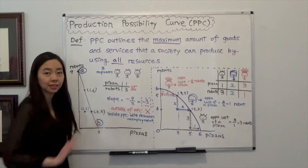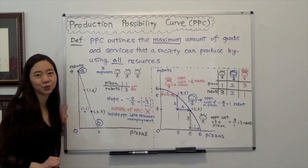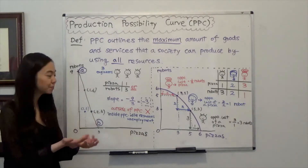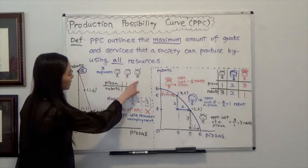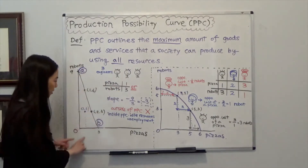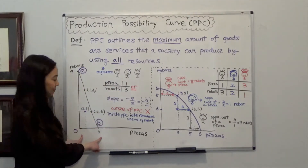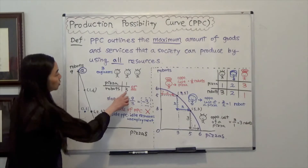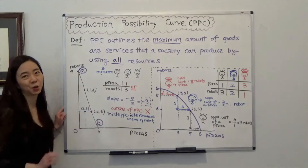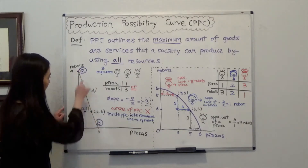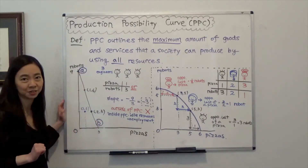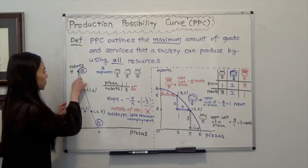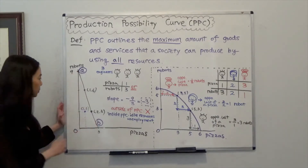Let's put pizza on the horizontal axis and robots on the vertical axis. Suppose we have all engineers producing only pizza — each engineer produces one pizza, and together we have three pizzas. Now suppose all engineers produce only robots: three times three gives nine robots and no pizza. Connecting the two points, we have the Production Possibility Curve. We can choose any point on this curve and produce at that point.